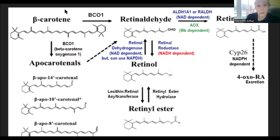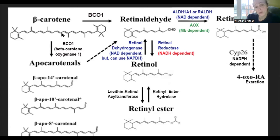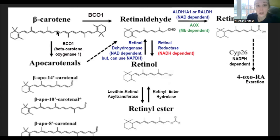Beta carotene comes from vegetables and is converted to retinol aldehyde by beta-carotene monooxygenase, also called BCO1. There's another enzyme, BCO2, which serves as a backup for BCO1 and helps make apocarotenoids. If you have a slow BCO1, you don't make much retinol aldehyde. You can convert beta carotene into retinol aldehyde and then back to retinol — it is possible.